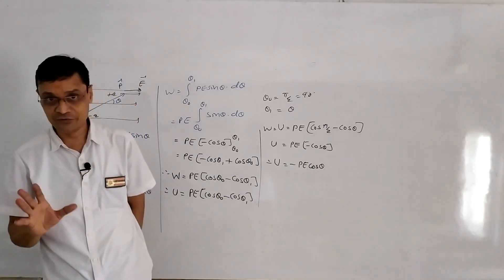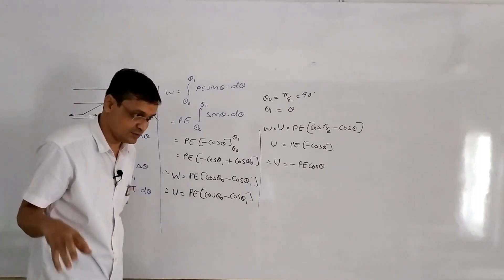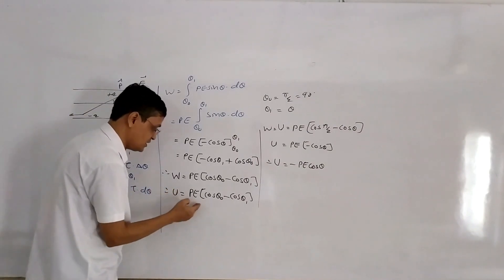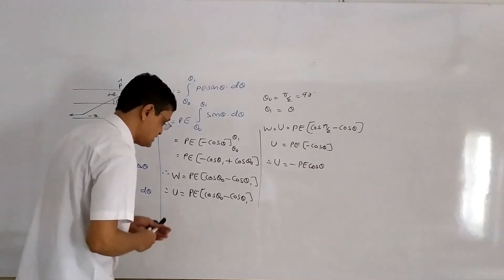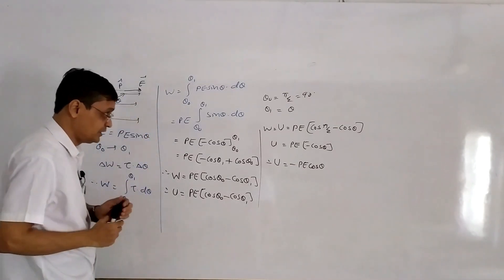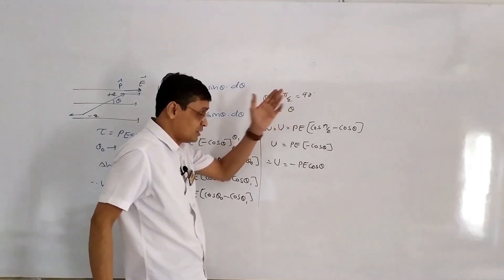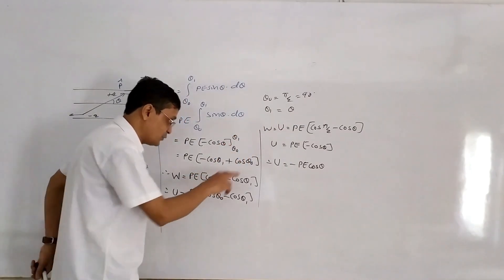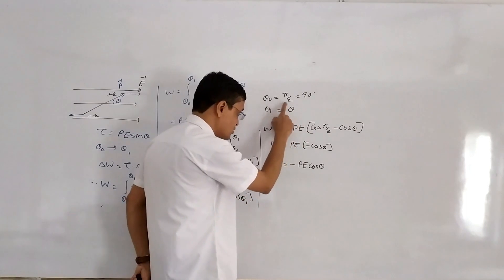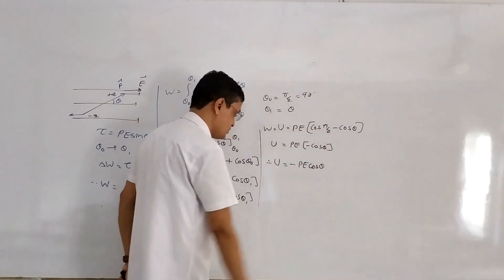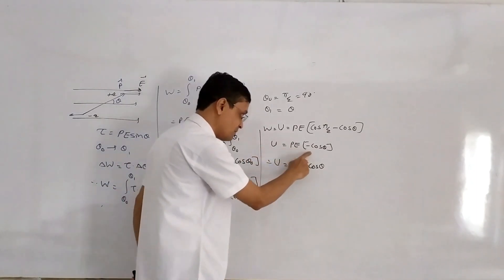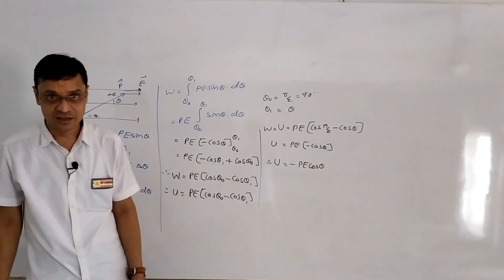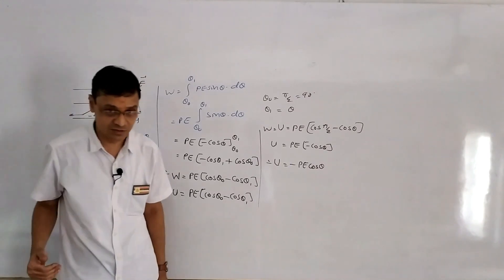Since this is a conservative field, the work done is stored as energy. So U = PE (cos theta₀ minus cos theta₁). Taking theta₀ = pi/2 (perpendicular initial position) and theta₁ = theta, we get U = PE (cos(pi/2) minus cos theta). Since cos(pi/2) = 0, U = PE(minus cos theta), giving U = minus PE cos theta. This equation must be prepared compulsorily.